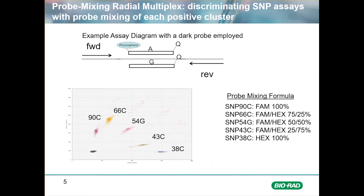The probes were all used at a final combined FAM and HEX concentration of 250 nanomolar. This strategy is ideal for discriminating multiple different rare mutations in cancer samples, as well as copy number variation types of assays. Note that the diagram depicts a dark probe — a probe without a fluorophore — which is added to block the probe from binding to any undesired single nucleotide that should not be detected. If this dark probe were not added, both SNPs would be detected; however, the non-perfect match target would show up with a lower amplitude cluster of positives.